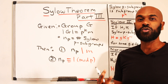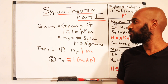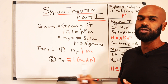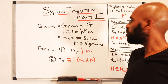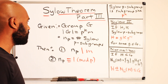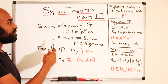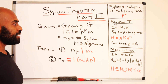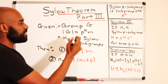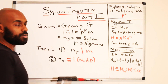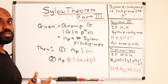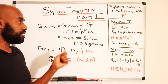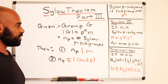Today's video is dedicated to the third part of the Sylow theorem, which gives us a restriction on the number of Sylow p-subgroups. Let's recap the entire situation: we have a group G of order p^k times m, where p is prime and m is relatively prime to p. So we're pulling out the largest factor of p that divides the size of G.